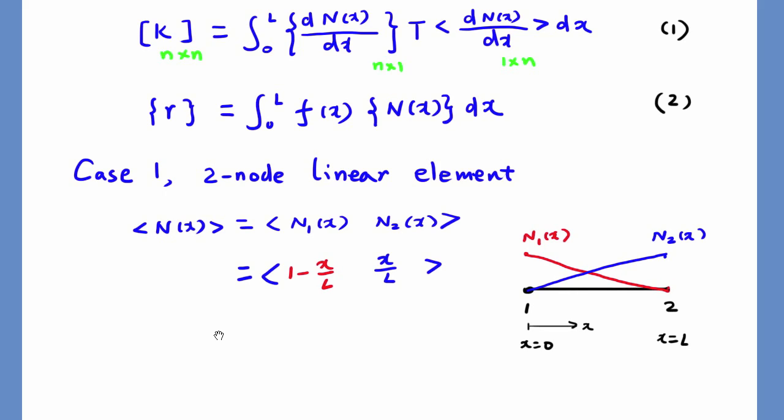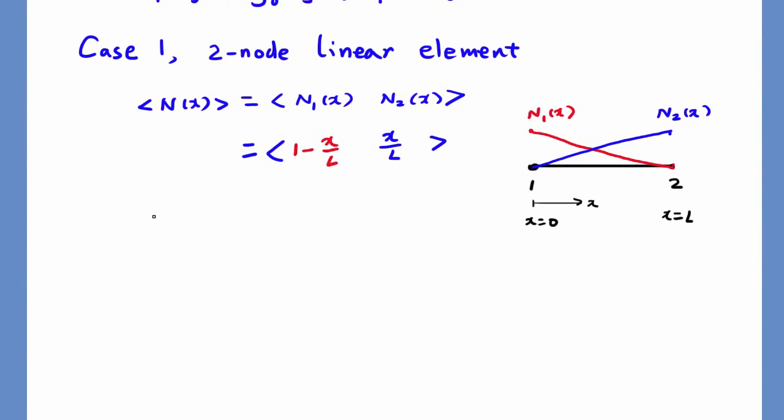In equation number 1, to find the stiffness matrix K, we need to evaluate the first derivative of shape function. It will be a constant vector for this case.